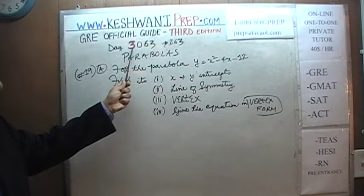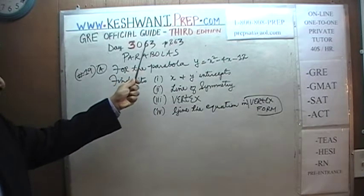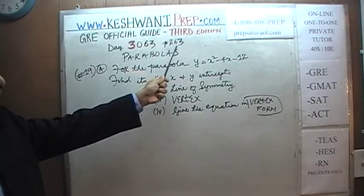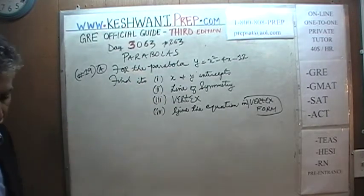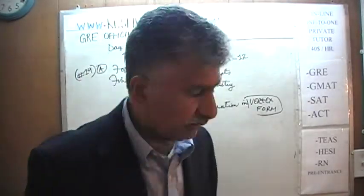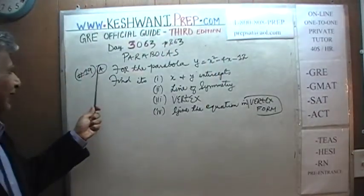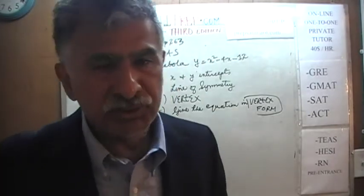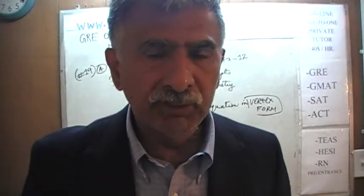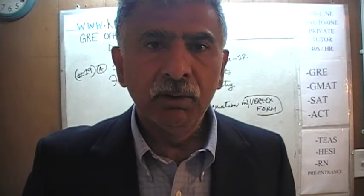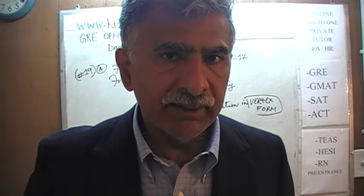The '3' is to signify that we are in the Third Edition. Third edition, day 63, and we happen to be on page number 263. Problem number 19 is what we are going to do, and it is labelled as 19A.